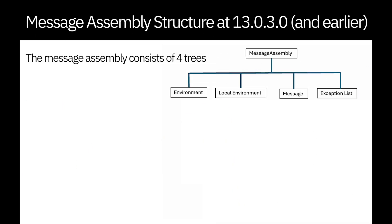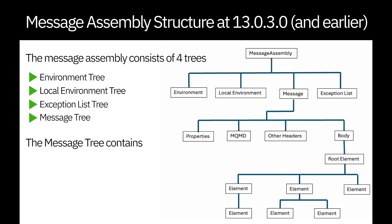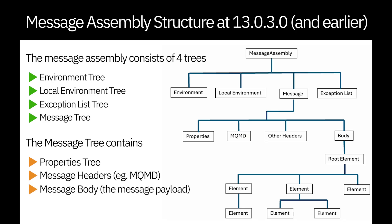In ACE version 13.0.3 and earlier, the message assembly was made up of four trees: the environment tree, the local environment tree, the exception list, and the message tree. The message tree contains a properties tree, message headers, and a message body.